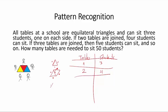When you have three tables, this guy who was sitting there must move here. So again, you only have room for one more person. Three tables, five students.